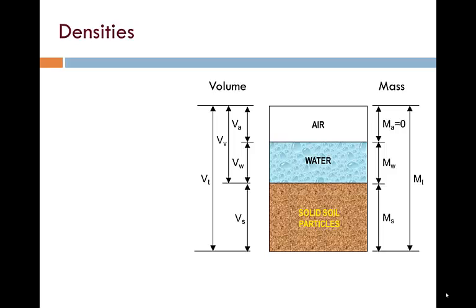We start by defining a number of density terms. Bulk density is the total mass MT divided by the total volume VT. The bulk density is usually determined in the laboratory from cylindrical samples of soil. Dry density is the mass of solids MS divided by the total volume VT. We'll use this soon in the compaction section of the course.